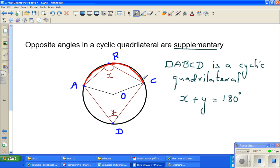If you look at this arc ABC, this red arc, it is subtending angle AOC at the center and angle ADC on the remaining part of the circle.